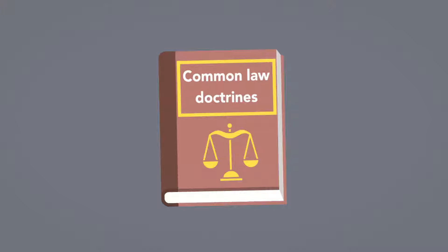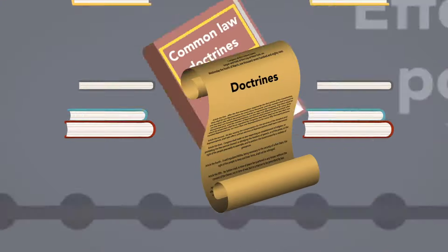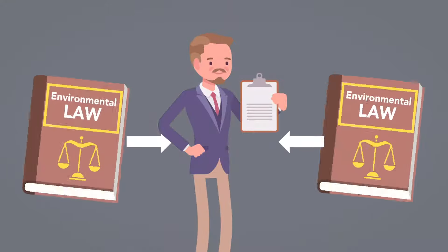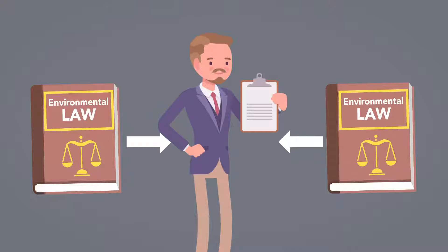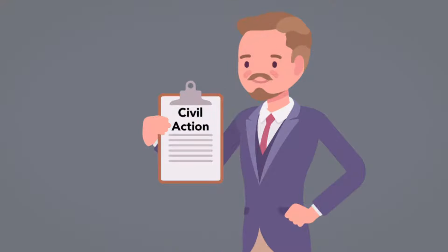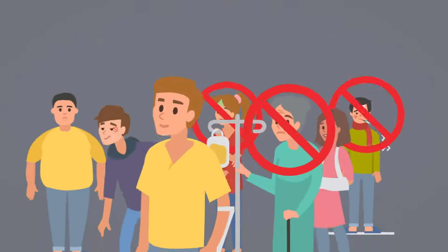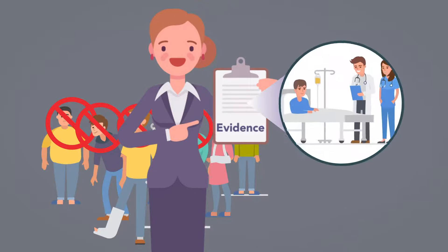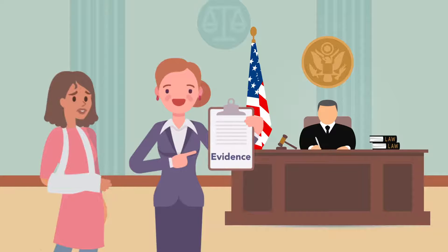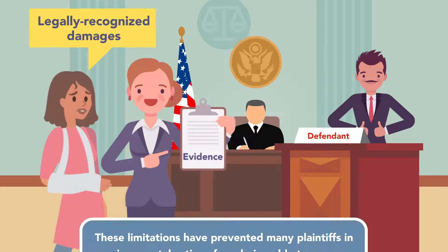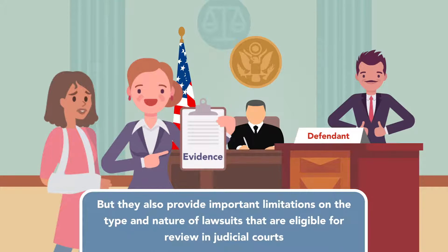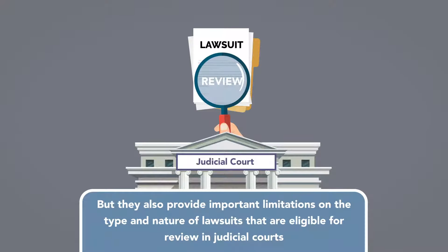Common law doctrines also provide an important basis for building effective policy over time. Due to doctrines that afford case decisions precedential value, and thus judicial consistency, causes of action are slow to change over time. Consistency in the application of environmental law is essential and aids in the development of new environmental laws and policies. Civil actions brought under the common law offer several benefits, but they are not accessible to everyone who may have potentially been harmed by an environmental release. A plaintiff must provide evidence sufficient to show that the defendant's wrongful action caused actual and foreseeable harm to the plaintiff, and must prove that she suffered legally recognized damages because of the defendant's wrongful action.